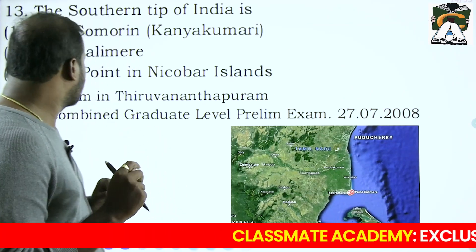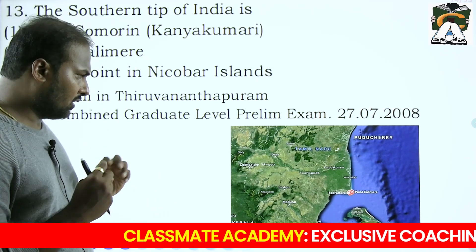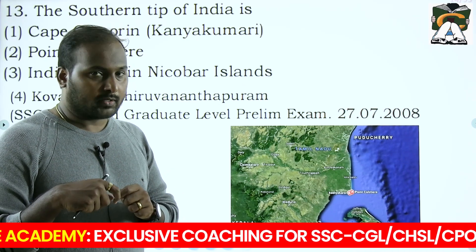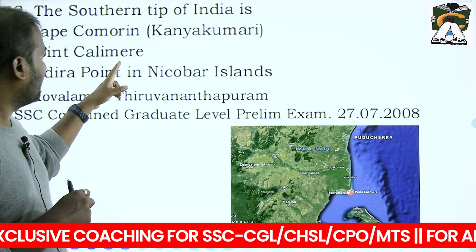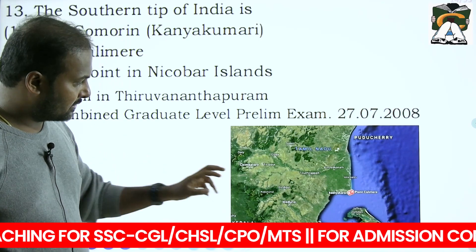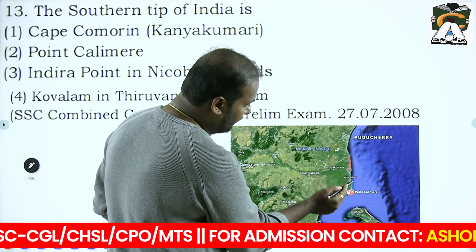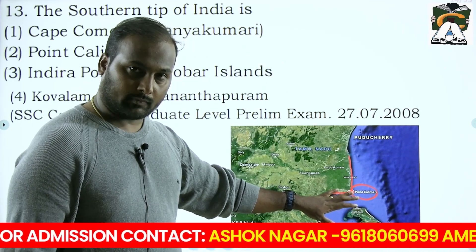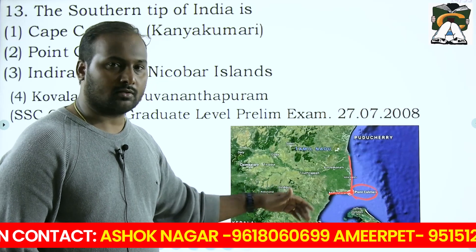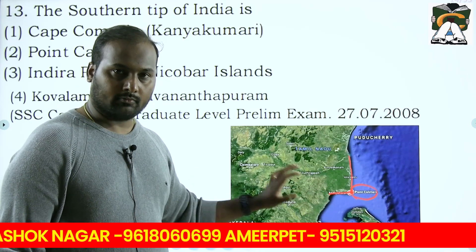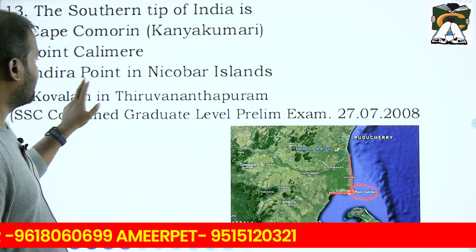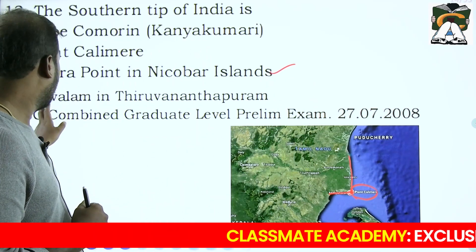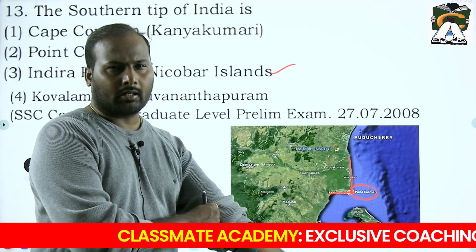'The southern tip of India is...' Cape Comorin or Kanyakumari is the southernmost point of the mainland. Point Calimere is present in Tamil Nadu - important to note as it is a cape in Tamil Nadu. Indira Point is in the Nicobar Islands, and Kovalam is a beach in Thiruvananthapuram, Kerala. So the answer depends on the question - if asking about the absolute southernmost point of India, it is Indira Point in the Nicobar Islands.